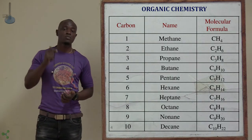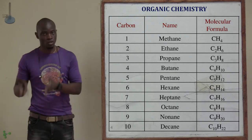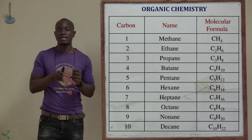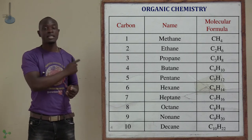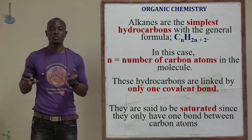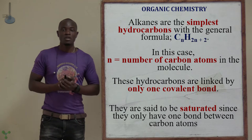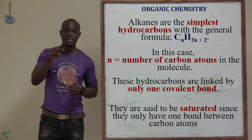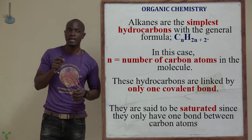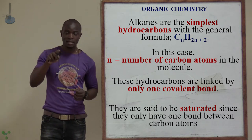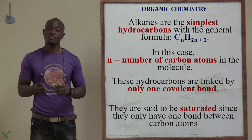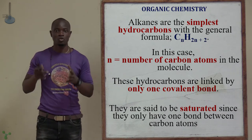For decane, the carbon atoms are ten and the hydrogen atoms are twenty-two. Because if you take N as the number of carbon atoms, in this case N equals ten. Using the formula C₁₀H₂ₙ₊₂, that gives us 2 times 10 plus 2, so the number of hydrogens is 22. For decane, we have C10H22.